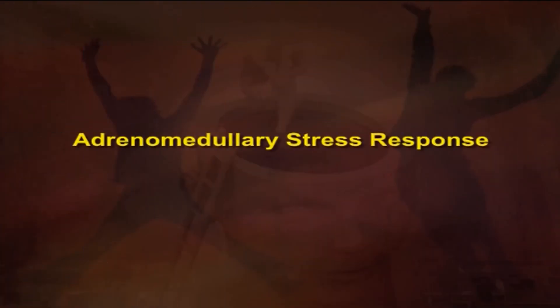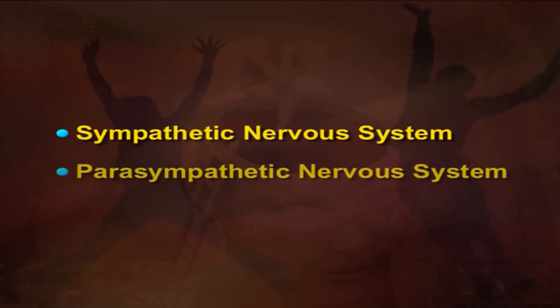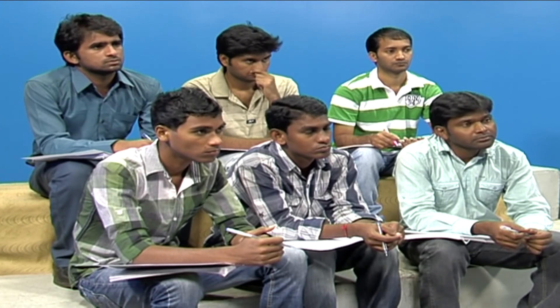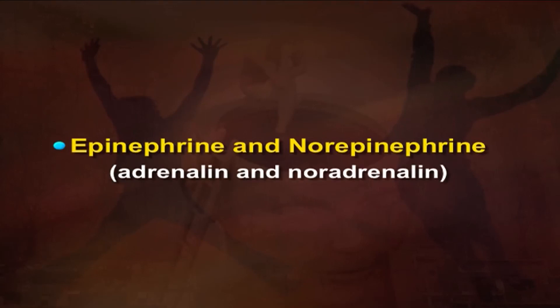Now that we have discussed one major pathway of the stress response — the adrenocortical stress response by means of the HPA axis — we will go to the second pathway: the adrenomedullary stress response, which takes place by means of the SAM axis or the sympathetic adrenomedullary axis. The autonomic branch of the peripheral nervous system consists of two divisions: the sympathetic nervous system and the parasympathetic nervous system. The hypothalamus, when it perceives a stressor, directly activates the sympathetic nervous system, which in turn activates the adrenal medulla, or the inner portion of the adrenal gland, resulting in the secretion of catecholamines such as epinephrine and norepinephrine, also known as adrenalin and noradrenaline.